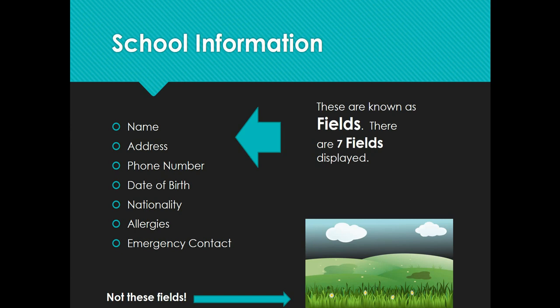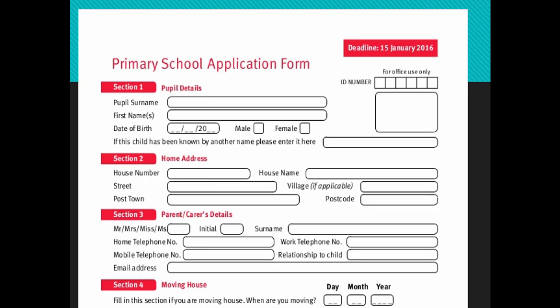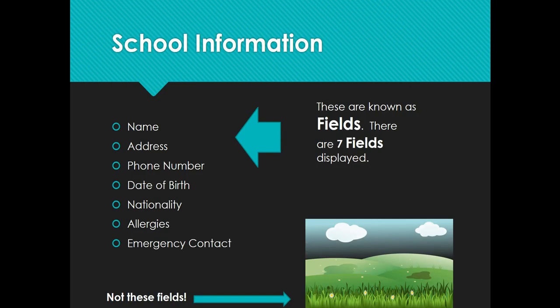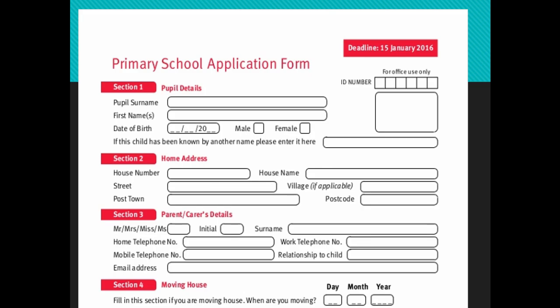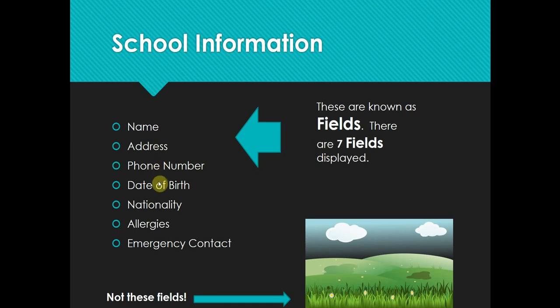For each student there would be information on the application forms they fill in when they join the school. The information the school might need could be the name and address, phone number, date of birth, nationality, allergies, and emergency contacts. When you fill in a form, after each one of these headings there's usually a space for you to fill in your information. These headings are known as fields. The name, address, phone number, date of birth — these are all fields. Here we can see seven fields.